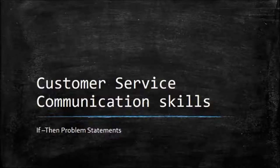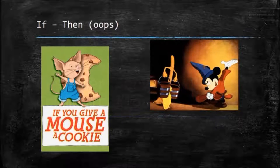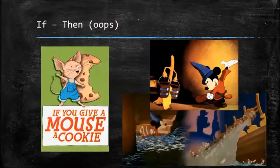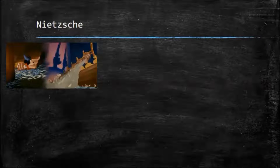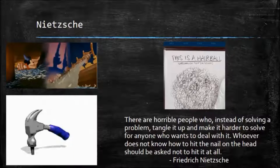Service communication skills: if-then problem statements. If you give a mouse a cookie, he may end up sweeping and washing the floors. And if you've seen the Sorcerer's Apprentice, you know there's an undesirable result. The problem statement for this situation begins with 'when you give a mouse a cookie' and ends with 'the room was flooded.' Of course there is a bit more to it in between, and the cookie wasn't the direct cause of the flood.